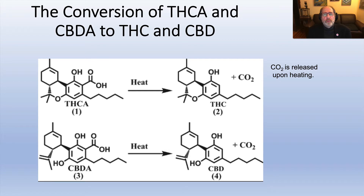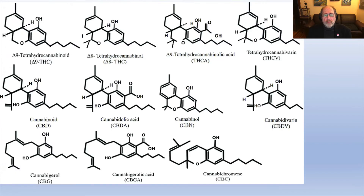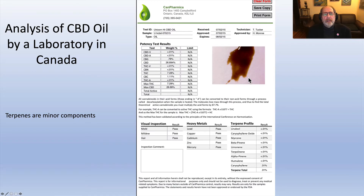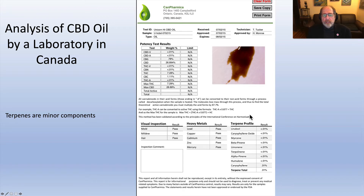We'll also talk about the conversion and activation of the cannabinoids, and become aware of some of the structures. There are more than 110 cannabinoids in a marijuana plant. We'll become familiar with how one analyzes the plant for clinical medicinal use and also for recreational use — analyzing for CBD, terpenes, and checking for mold, mildew, hair, and heavy metals, to make sure the plant is not contaminated.